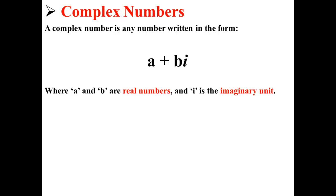Remember that a complex number is any number written in the form a plus b times i, where a and b are real numbers and i is the imaginary unit.